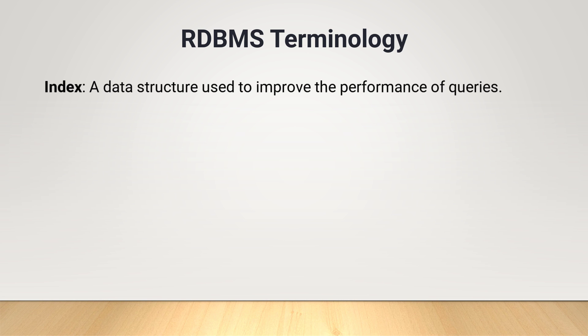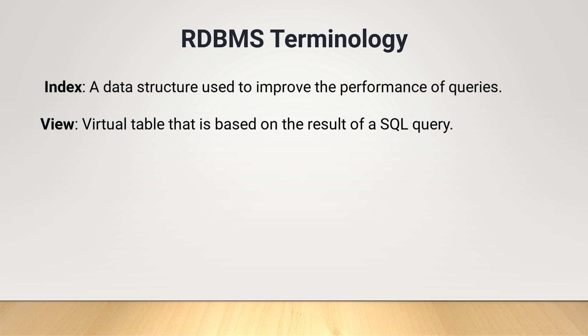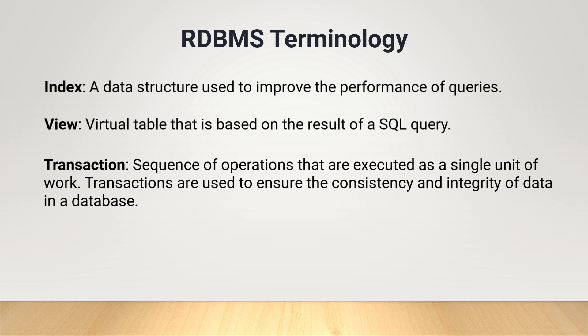Index: an index is a data structure used to improve the performance of queries by providing a quick access path to the data in a table. View: a view is a virtual table that is based on the result of a SQL query. Views are used to simplify the complexity of data by hiding the underlying structure of tables. Transaction: a transaction is a sequence of operations that are executed as a single unit of work. Transactions are used to ensure the consistency and integrity of data in a database.